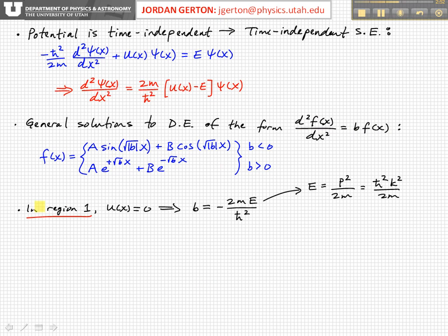So in our case, in region one, that's between the potential wall, so that's where u is equal to zero. Okay, then that means this term goes to zero, and we have b is equal to minus 2m E over h bar squared. And since the mass is positive, the energy is positive as you defined it, then we have that b is negative in this case.